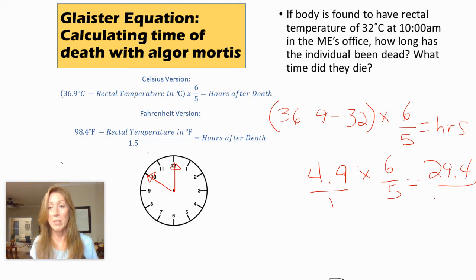And then we multiply the 1 times 5 across. And so when we divide 29.4 divided by 5, we end up with 5.88 hours.